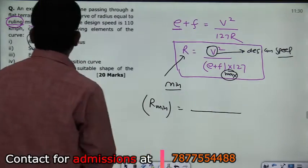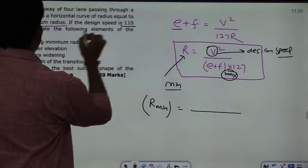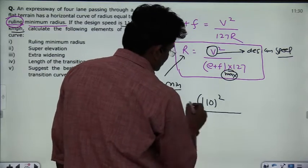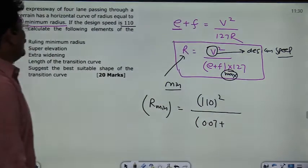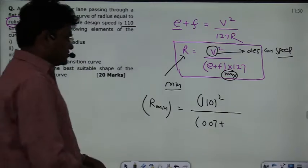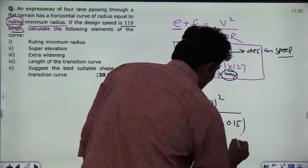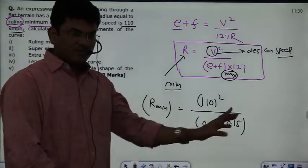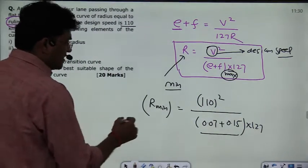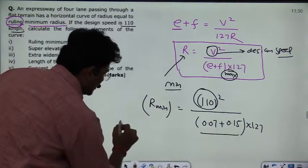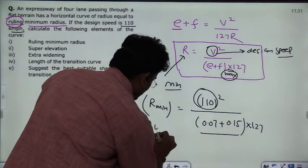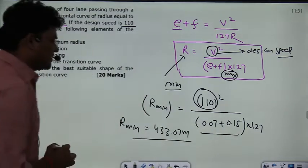Ruling means design speed, which is 110 km/h. For flat terrain, the maximum super elevation E is 0.07, and the maximum lateral coefficient of friction F is 0.15. Substituting into R = V² / [(E + F) × 127], we get R_minimum = 110² / [(0.07 + 0.15) × 127] = 433.07 meters.